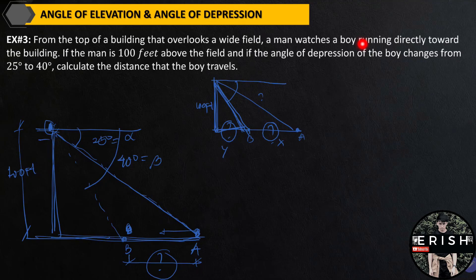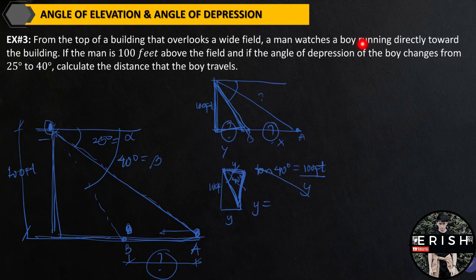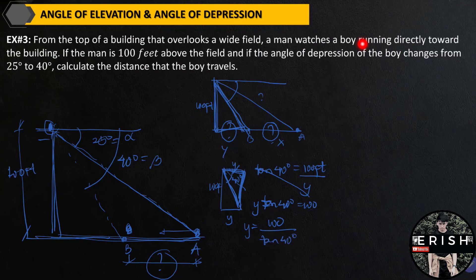Let's draw it again. This is Y. This is 40 degrees. Since the 100 feet is also equal to the opposite side here, we can use this right triangle. We will use the tangent function: tangent 40 degrees equals 100 feet over Y. Solving for Y: Y equals 100 feet over tangent 40 degrees. By calculating, Y is approximately 120 feet. But that is not yet our final answer.